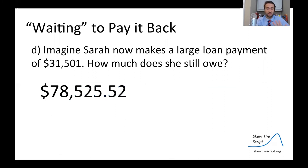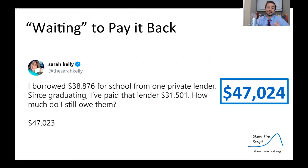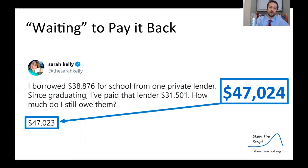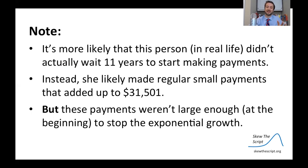Now let's imagine Sarah makes a payment of about $31,500 on this amount. She's left paying $47,000 — exactly what happened. We're using estimated numbers to get a sense of how a scenario like this could play out, and our number matches almost to the dollar the number she reported. A quick note: in real life, she likely didn't wait 11 years to start making payments. It's more likely she was making small payments regularly that added up to about $31,500. The point remains: these payments weren't big enough at the beginning of the loan to stop the exponential growth.